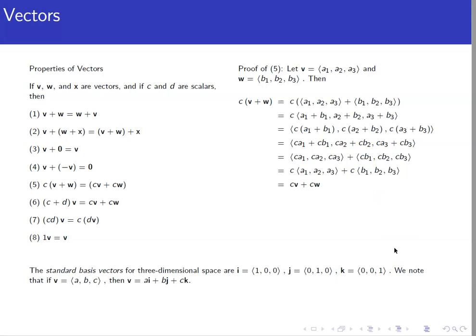Finally, instead of using component notation, we can write vectors using standard basis vectors. For three-dimensional space, the standard basis vectors are i = ⟨1, 0, 0⟩, j = ⟨0, 1, 0⟩, and k = ⟨0, 0, 1⟩, representing one unit in the x, y, and z directions respectively. Any vector ⟨a, b, c⟩ can be written as a linear combination: a times i plus b times j plus c times k. This notation will be useful for later analysis of vectors.